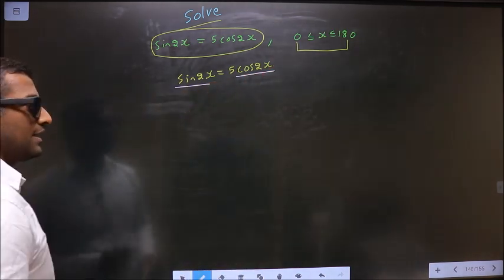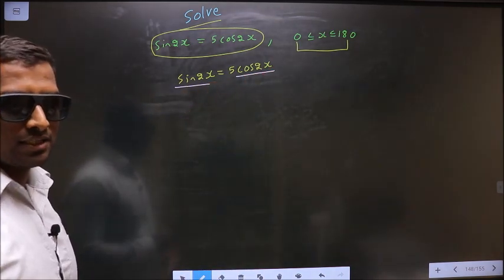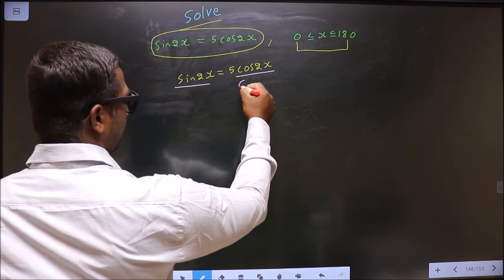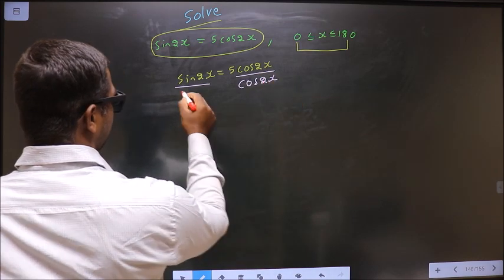But to solve it, there should be only one trigonometric ratio. And how do I do that? We should divide by cos 2x on both sides.